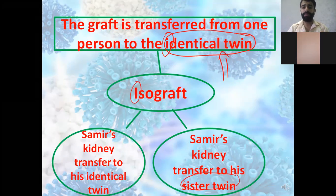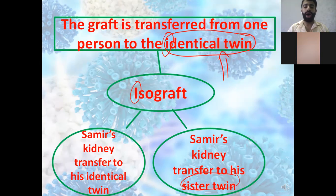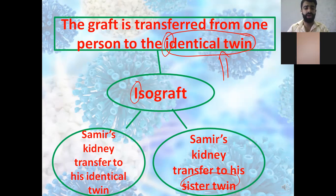The second type is called the isograft. 'Iso' starts with the letter I — just like 'identical' — so iso is for identical twins. The graft is transferred from one person to their identical twin. For example, Samir's kidney transferred to his identical twin is called an isograft.